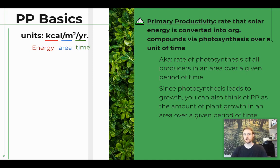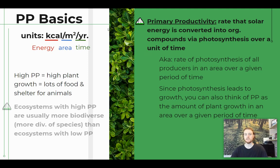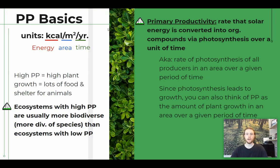There are also a couple of trends we want to understand. The higher the primary productivity in a given area, the higher the plant growth, which means there is going to be more food and shelter available for animals, which means there will be higher biodiversity. Ecosystems with high primary productivity are going to have a higher diversity of species they can support, and therefore we would consider them to be more biodiverse.